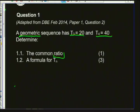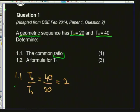For 1.1: since it's a geometric sequence, if I take the fourth term and divide it by the third term, that gives me my ratio. T4 is 40 and T3 is 20. 40 divided by 20 is equal to 2. So the ratio r = T4 ÷ T3 = 40 ÷ 20 = 2. This means that in this sequence we are multiplying by 2 each time. One mark.